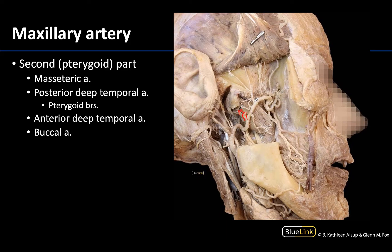The next branch you can locate — I'm just going to draw a line here — is the posterior deep temporal artery, which you can see ascending to reach the deep side of the temporalis muscle, which has been reflected up so you can really see some of these branches. This artery often gives off a varying number of pterygoid branches, which you can see here and here. It's important to note that the pterygoid branches can actually arise from many arteries in this region — you can even see one coming directly off of the maxillary artery.